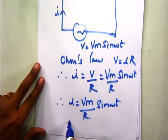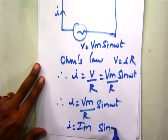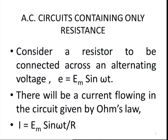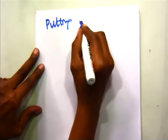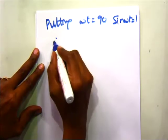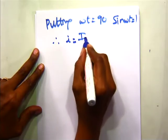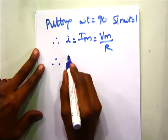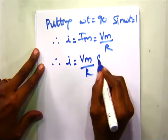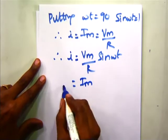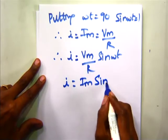The current I will be maximum when sin omega t equals 1, or when omega t equals 90 degrees. Substituting, putting omega t equal to 90, we get sin omega t equal to 1. Therefore, the current I becomes maximum, equal to Vm by R. So we can write current I equals Vm by R sin omega t. But Vm by R equals Im, so I becomes Im sin omega t.